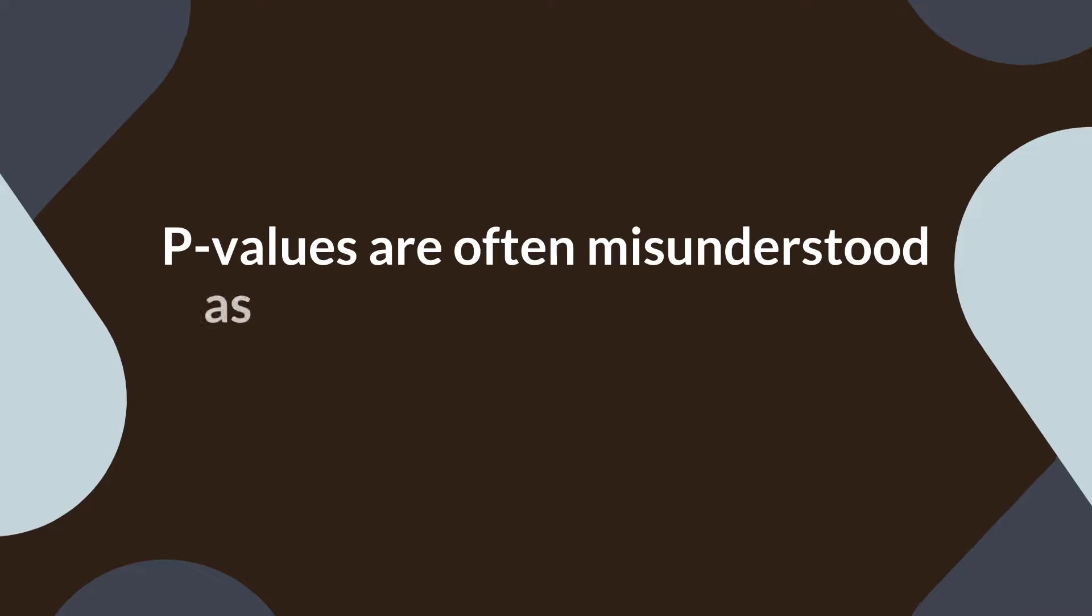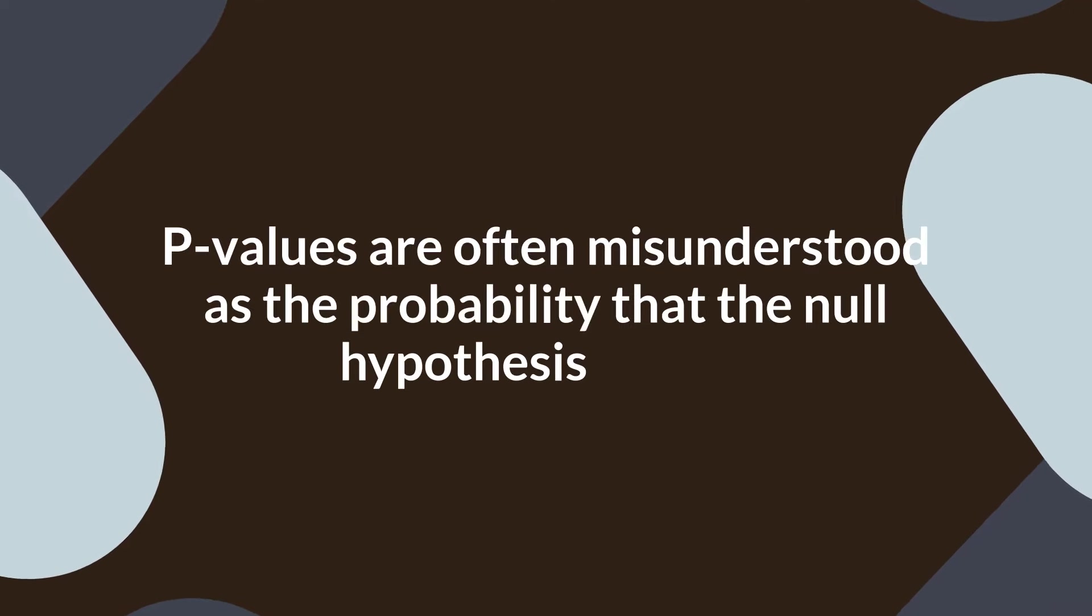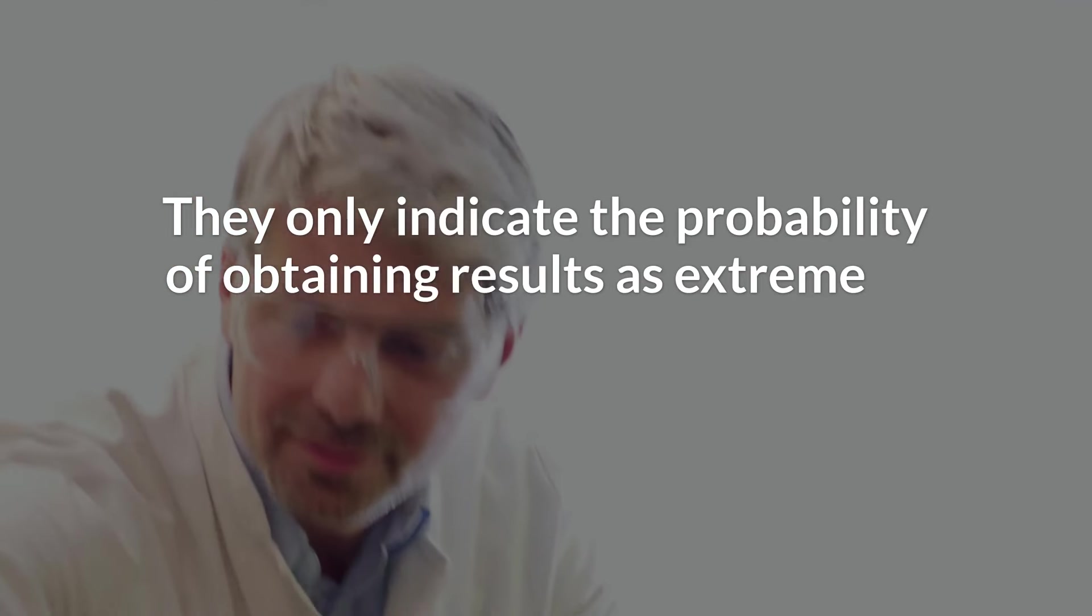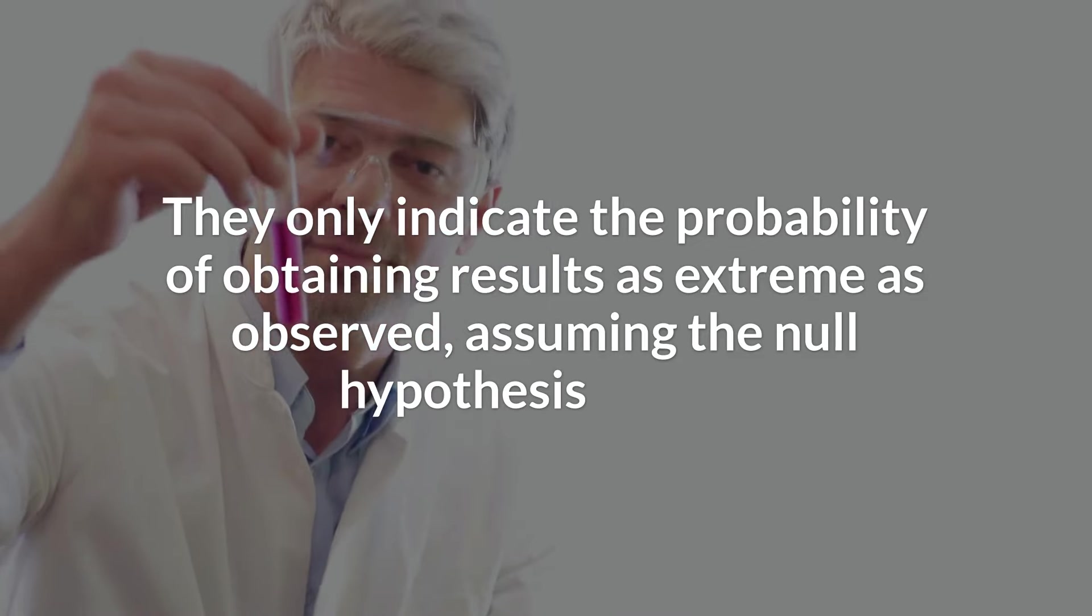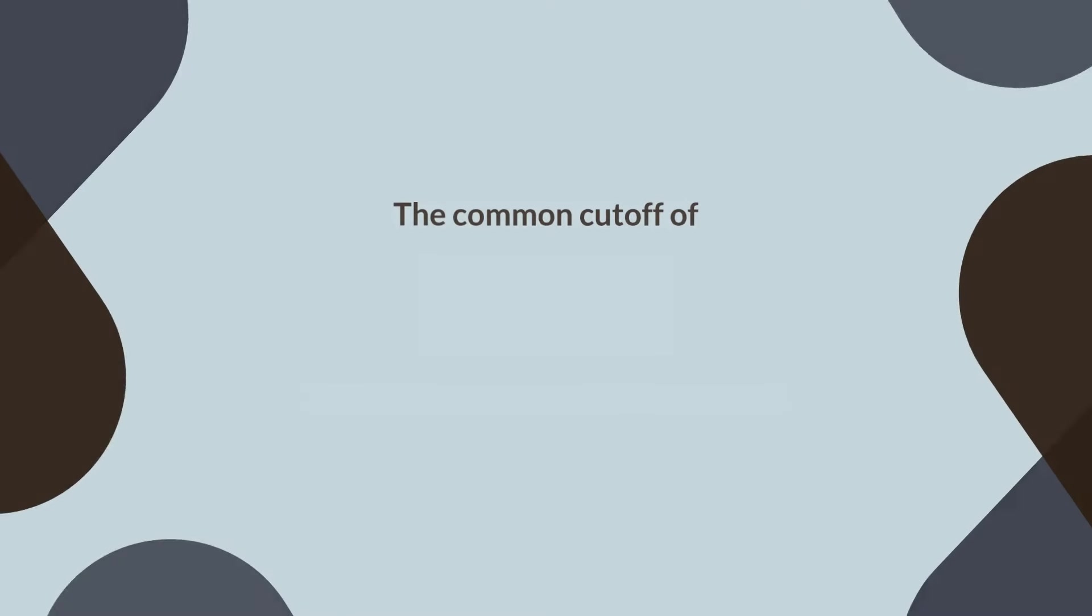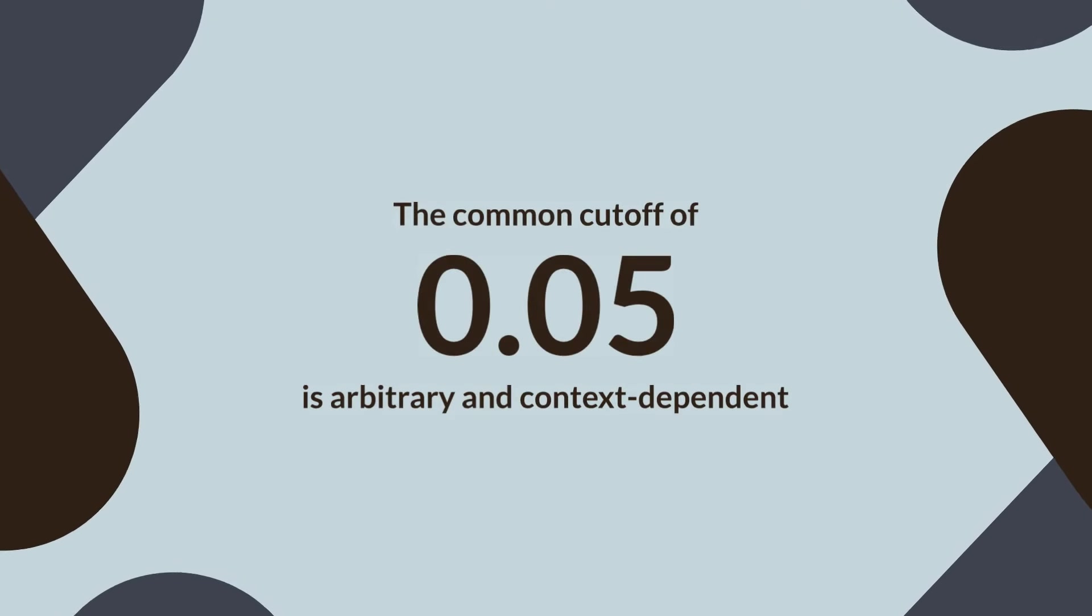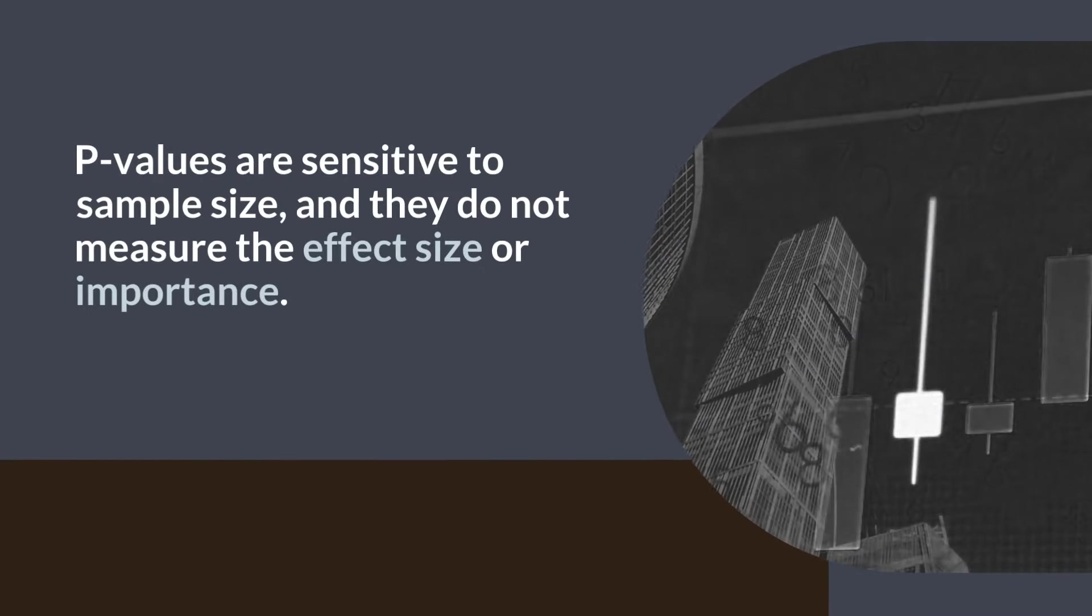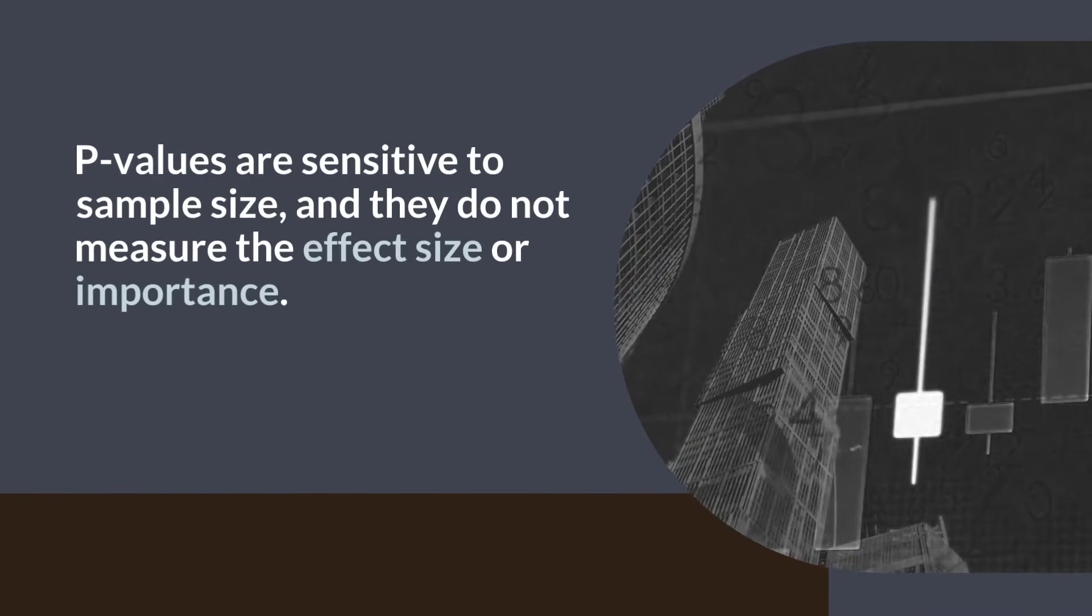P-values are often misunderstood as the probability that the null hypothesis is true. They only indicate the probability of obtaining results as extreme as observed, assuming the null hypothesis is true. The common cutoff of 0.05 is arbitrary and context-dependent. P-values are sensitive to sample size, and they do not measure the effect size or importance.